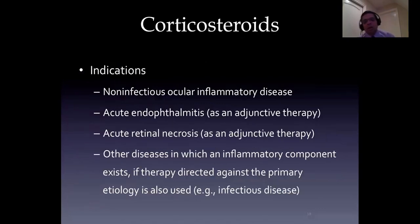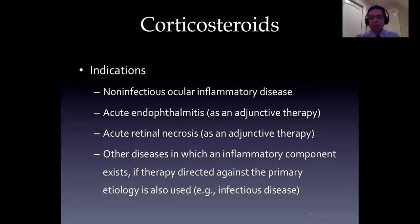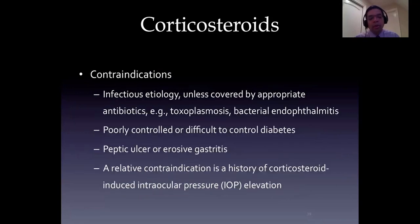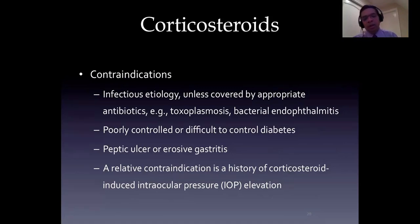Corticosteroids are the mainstay for treatment of non-infectious ocular inflammatory disease, but also used as adjunctive therapy for infectious conditions after the infection has been treated. When there's an inflammatory component to infectious disease, treat the infection first and 24-48 hours after initiation of systemic and/or local antibiotic therapy, you can then start corticosteroid therapy. You should not use corticosteroids alone for the treatment of infectious uveitis ever. There was a question about toxoplasmosis treatment.